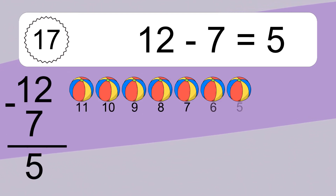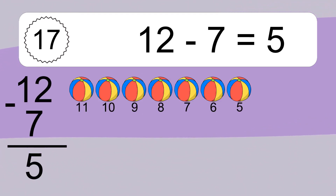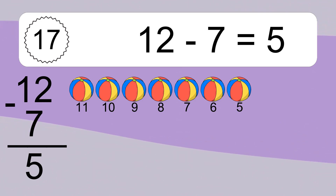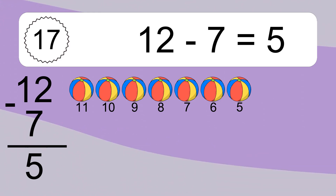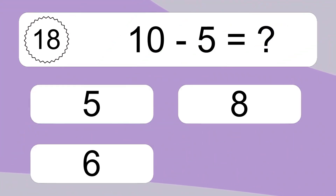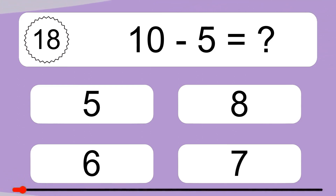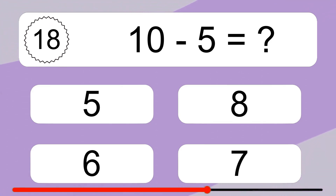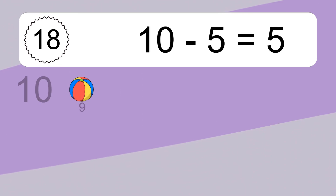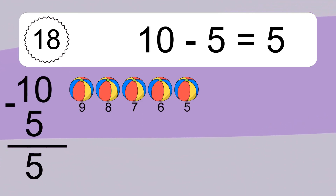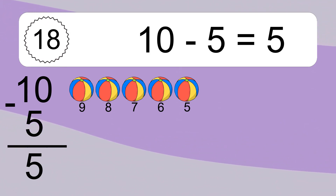12 minus 7 equals what? 12 minus 7 equals 5. Let's count it: 11, 10, 9, 8, 7, 6, 5. 10 minus 5 equals what? 10 minus 5 equals 5. Let's count it: 9, 8, 7, 6, 5.